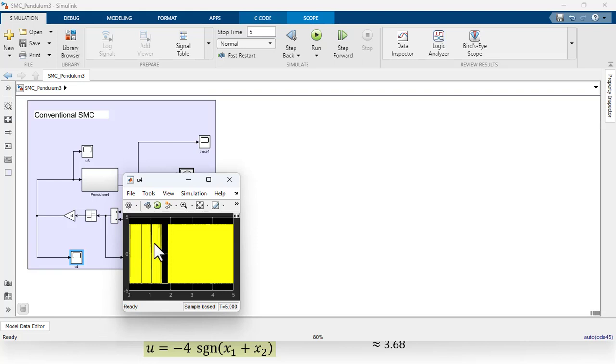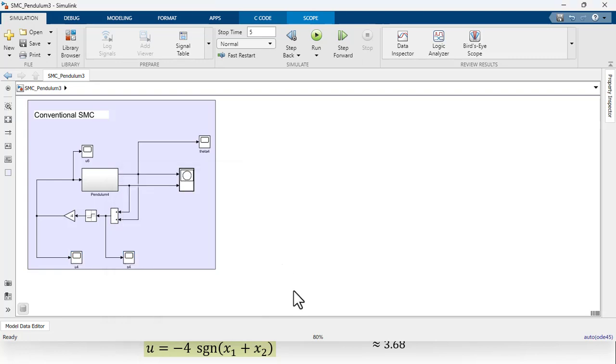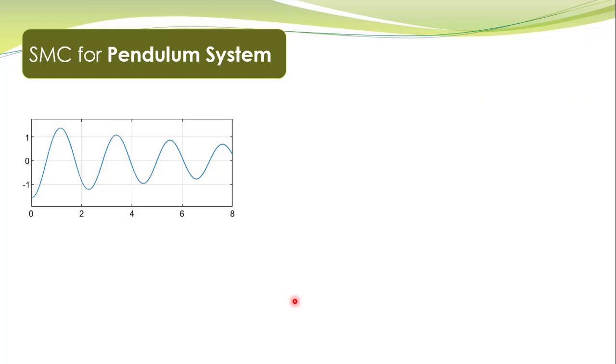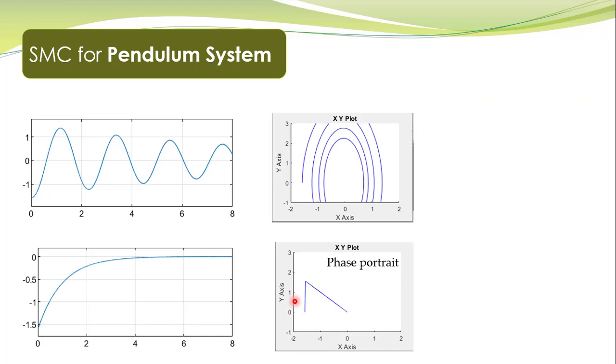Therefore it is sometimes more convenient to plot the average value or smoothened value of this control action, and that is also plotted. All these graphs are shown over here, and the control action is on the next slide.